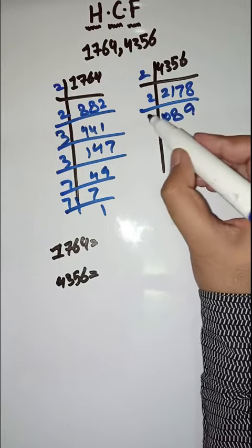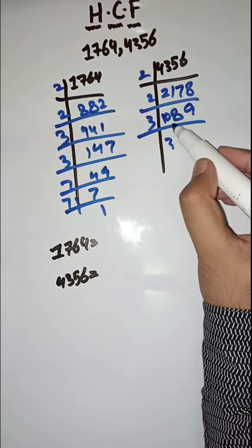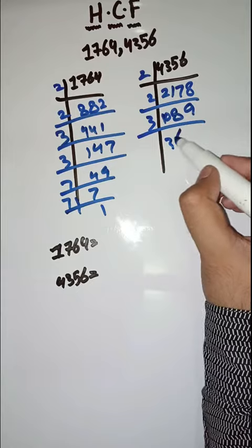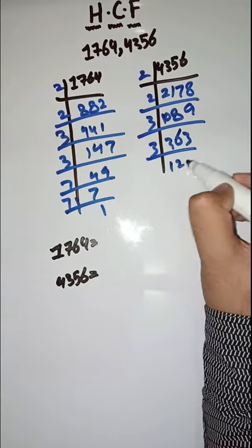Now with 3, dividing repeatedly: 213, then 71, then again with 3, continuing until we can't divide by 3 anymore.